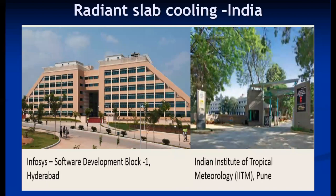Two typical examples of radiant slab cooling buildings in India are: one in Hyderabad — the Infosys software development campus — where the entire building uses radiant cooling; and a second one in Pune — the Indian Institute of Tropical Meteorology.